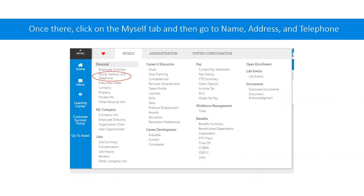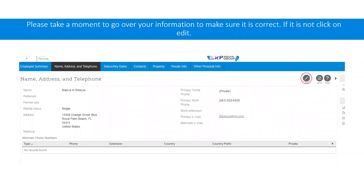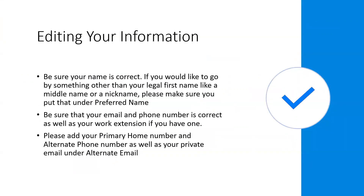Then under personal, please click name, address, and telephone. Here is where your personal information is — take a moment to go over it all and make sure it is correct. If it is wrong or if there is missing information, in the upper right corner there is a button to edit. When editing, you may notice a field called preferred name. If you prefer to go by a middle name or a nickname, you can put it here so that it will not mess up your legal name but still let you have the name you want to go by. Your work phone and email should already be in the system, but we might not have your personal number or email. If you could, please put that in as well, as we would like to have it in case of emergency.